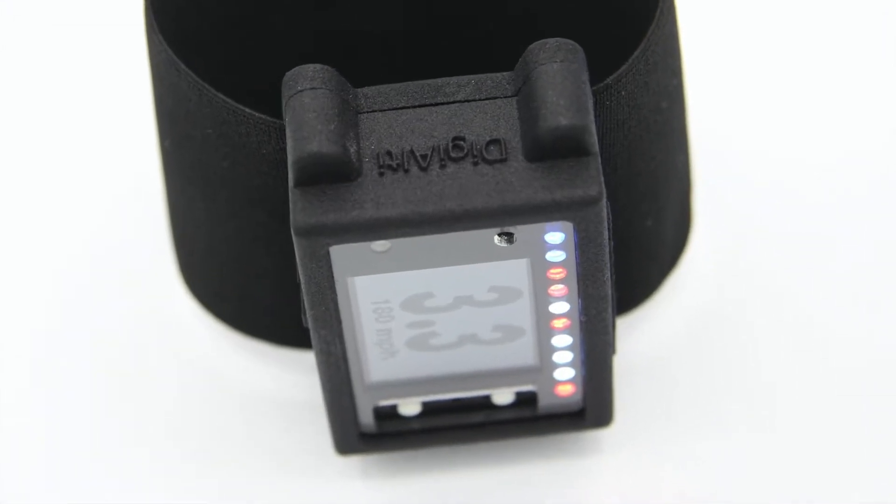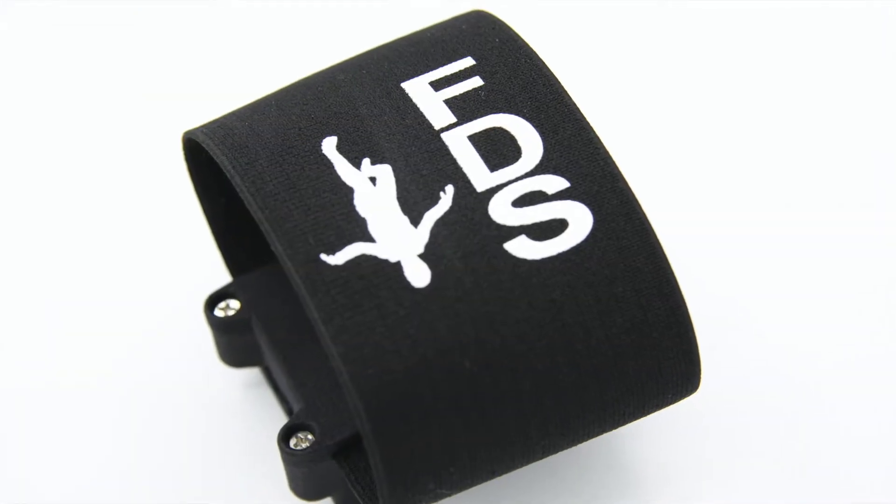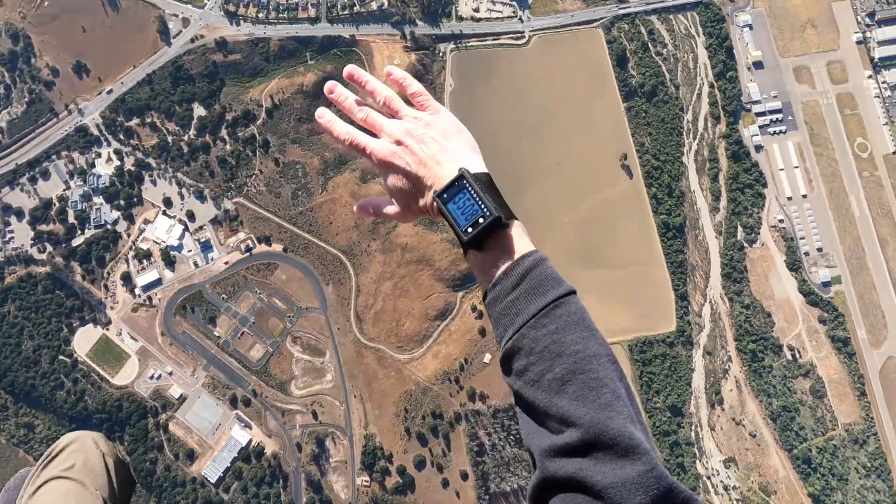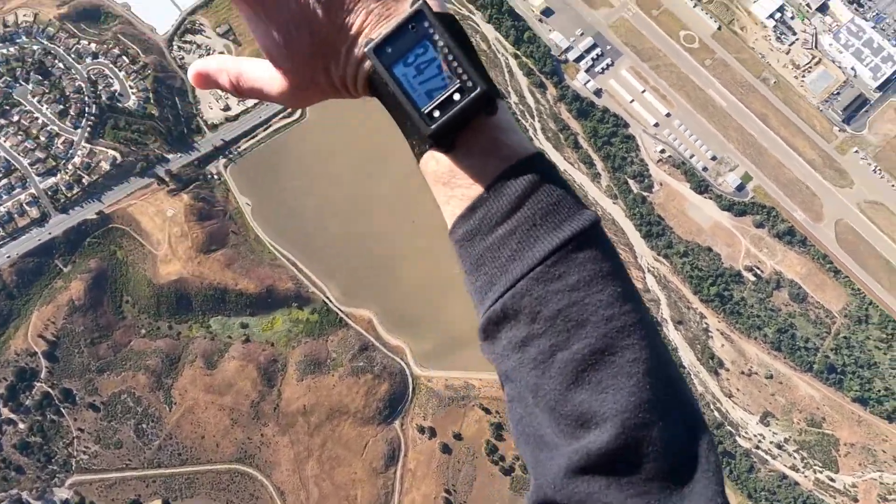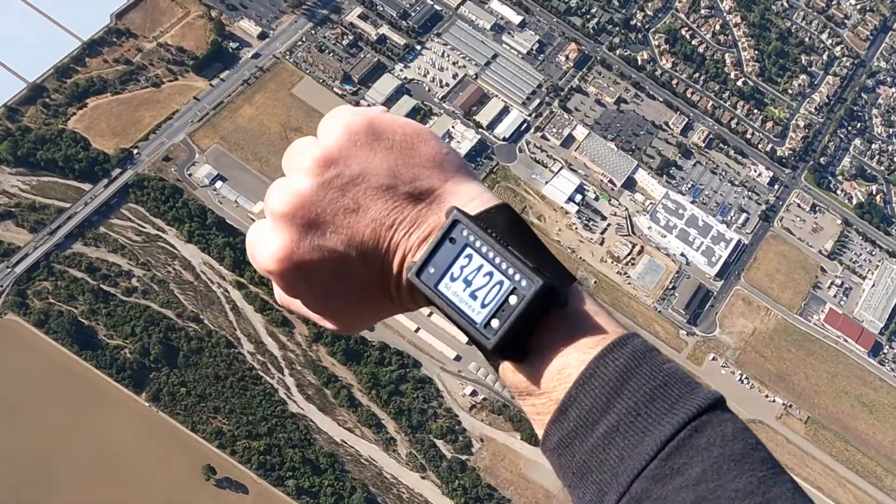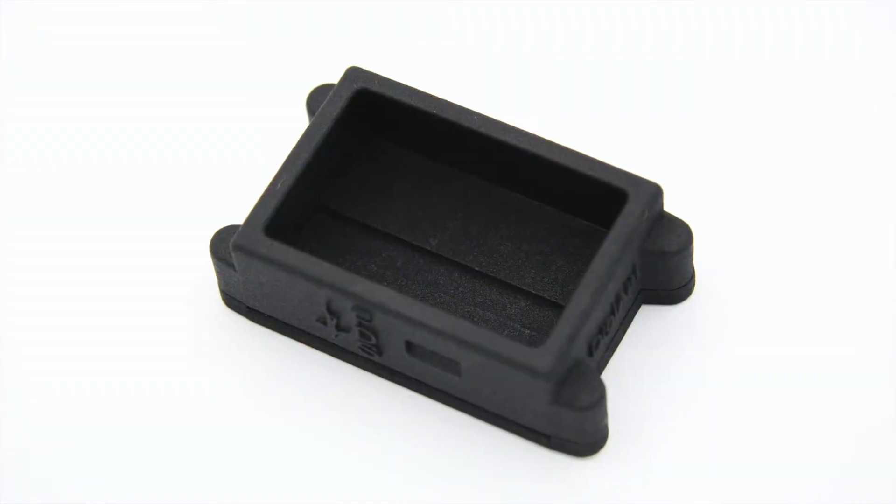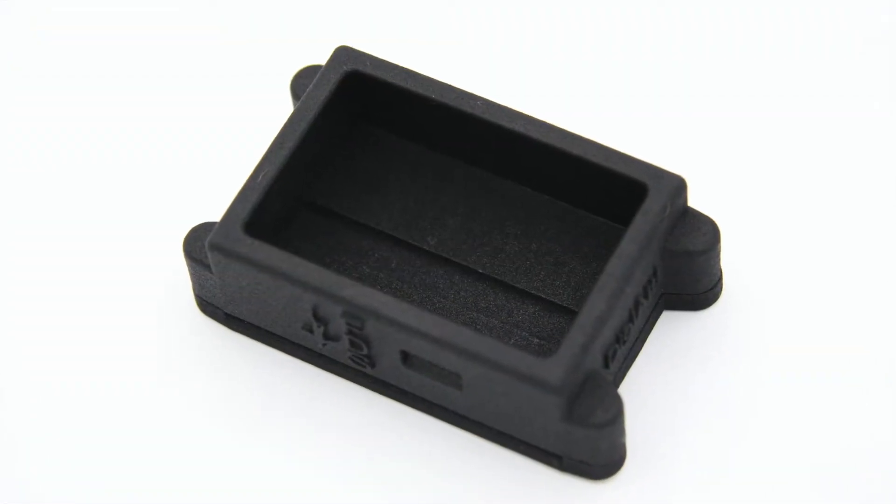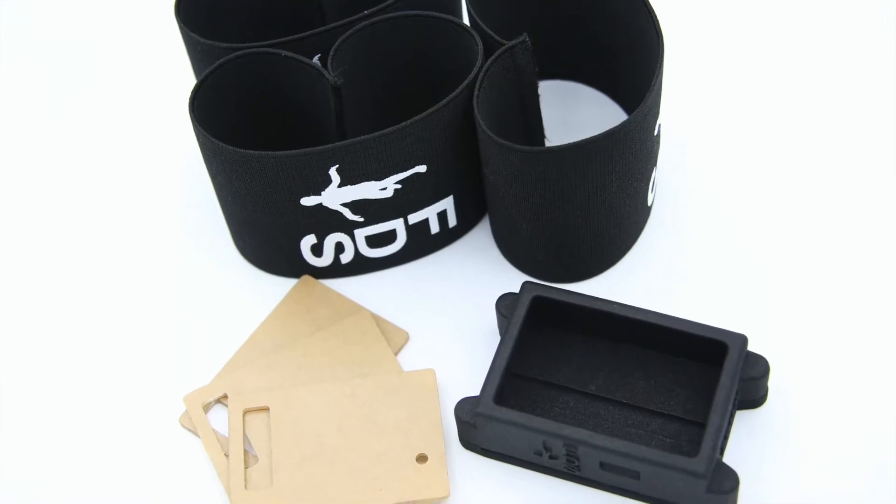As usual we kind of went our own route on this one. These mounts aren't like anything any other manufacturer has made. These are made to last a long time. They're actually made of the same sturdy material as our standard mount. Each one comes with three elastic bands and three replacement acrylic covers as well, which are actually the same acrylic covers that come with the standard mount.